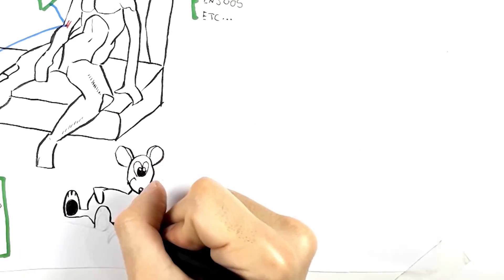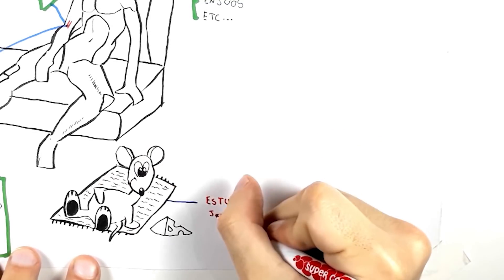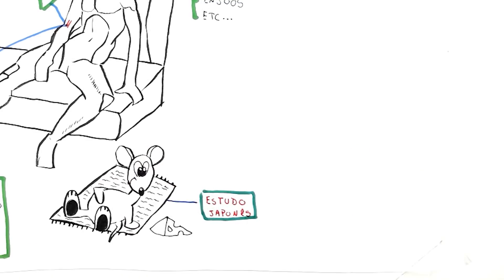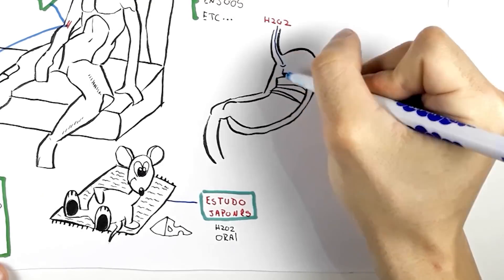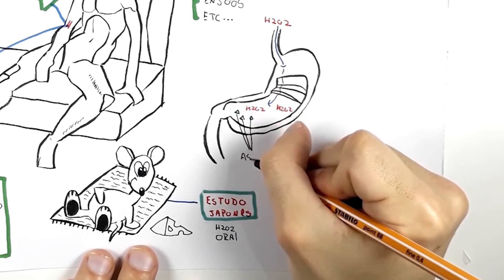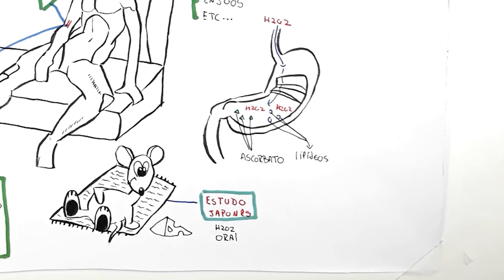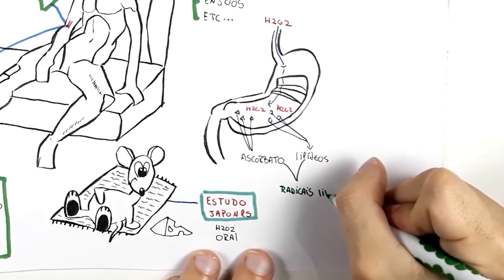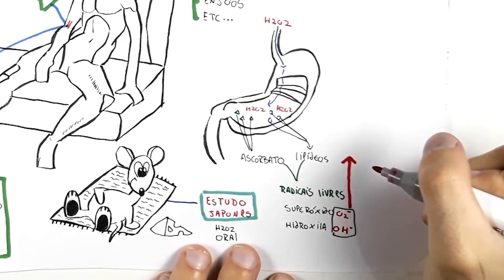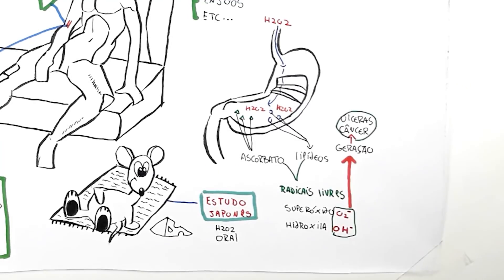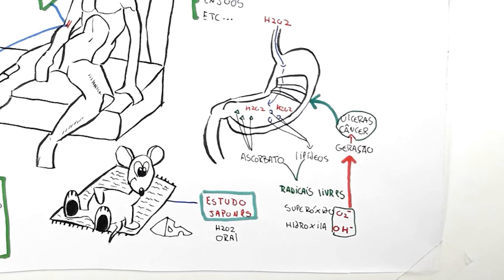Another important study was the Japanese study done with rats, which subjected the animals to ingestion of a hydrogen peroxide solution orally. They then ingested this solution, which fell into their stomachs and came into contact with substances that were already present there, such as ascorbate and even lipids, generating free radicals such as superoxide and even hydroxyl, for the posterior generation of ulcers and even cancer. Wow! Does this mean that this widely publicized oral hydrogen peroxide protocol, so publicized on the internet, can even cause cancer? And I answer you the following.